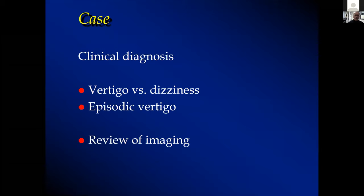I used this at case conference for residents to make the distinction between vertigo, which is the illusion of movement, and dizziness, which is a subjective symptom without the hallucination of movement of the external world. In terms of her workup, she's pretty young to have a symptom complex similar to Meniere's disease, which is endolymphatic hydrops.